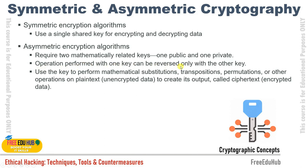In asymmetric encryption, the operation performed with one key can only be reversed with the other key. A key performs mathematical substitution, transposition, permutations, or other operations on plain text to create ciphertext. For example, if Alice wants to send data to Bob, Alice uses her private key and Bob's public key to encrypt the data. Bob then uses Alice's public key and his own private key to decrypt the data.